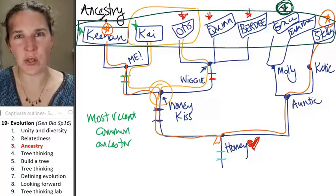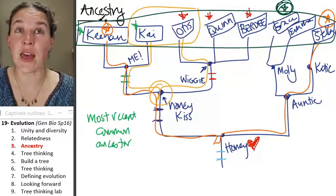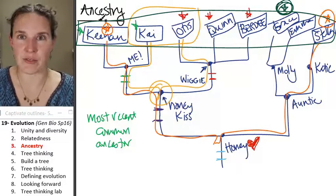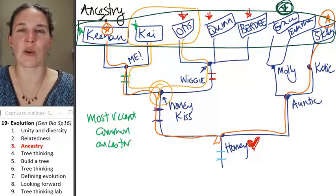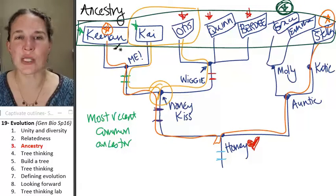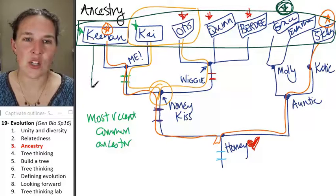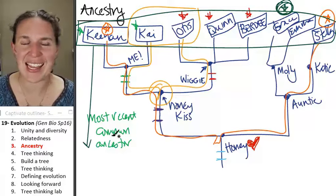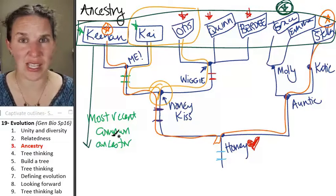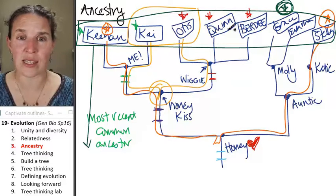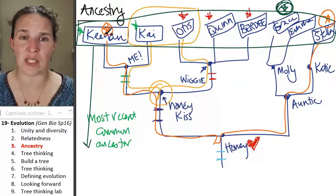Usually the top of the tree indicates critters that are alive. These are critters that you could go out and find. Usually the critters toward the bottom, ancestors actually aren't alive anymore, and only living things are up at the top.